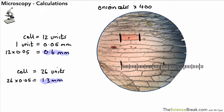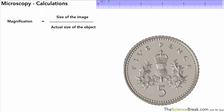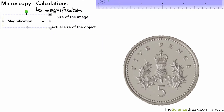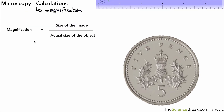In our last video we used microscopes to estimate the size of cells. In this one we're going to use a formula to work out the magnification of an image. We're going to work with magnification and also rearrange the formula to work out one or two other things given in the formula. We're going to have a quick practice on something that's quite simple.